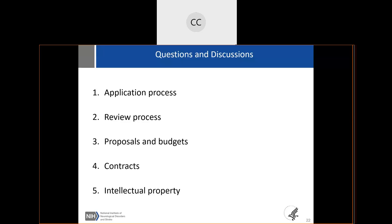Does a startup need to have full-time employees to qualify for SBIR? That's SBIR-specific — you should talk to the SBIR people, but generally virtual companies will not come in through SBIR. They'll come in through the UG3/UH3 mechanism because they can't meet SBIR rules. SBIR requires that in phase one, 66% of the money stays with the small business interest, and in phase two, greater than 50% must stay with the small business. If the money is just coming in and going out to contractors for research work, you won't meet SBIR rules.